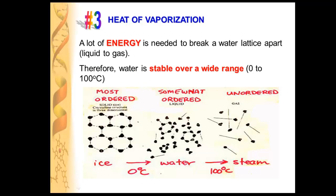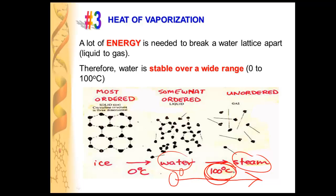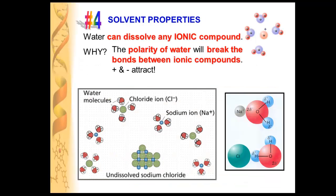Next we'll talk about why water has a high heat of vaporization. That means it takes a lot of energy to break water apart from a liquid to a gas. To turn water into steam, you have to go all the way from 0 degrees to 100 degrees — so water is completely stable over a range of 100 degrees. Below 0 degrees water will freeze. So water can store a lot of heat.